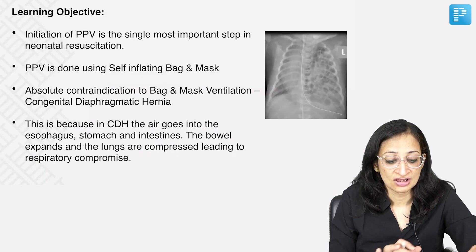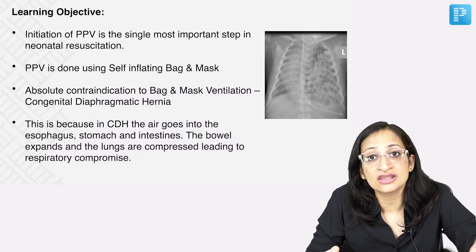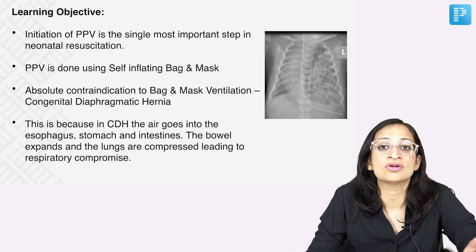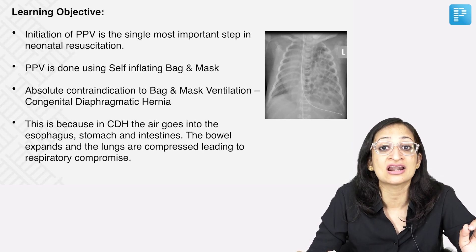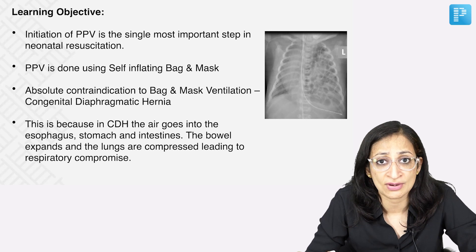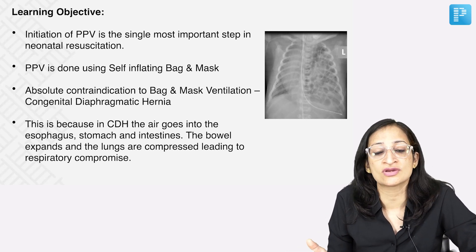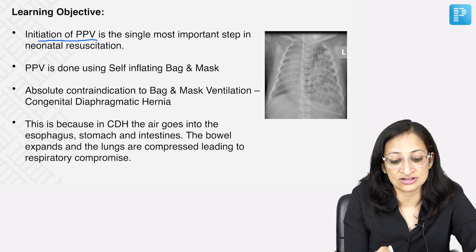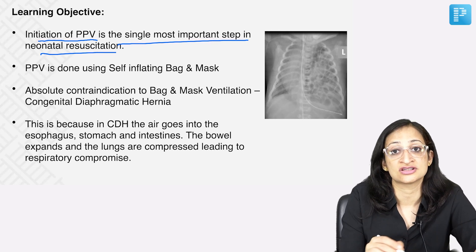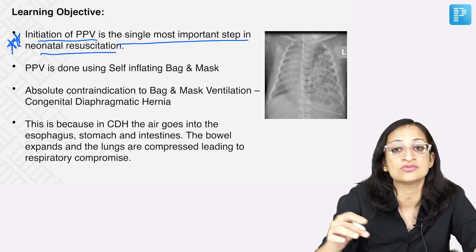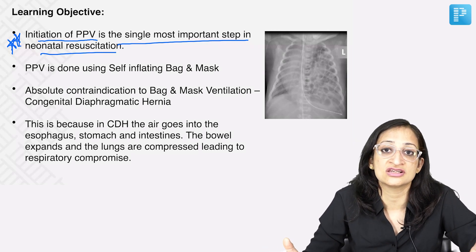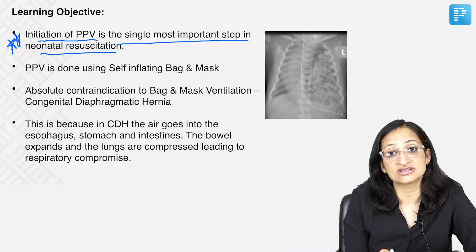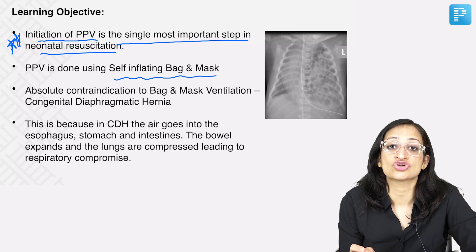Learning objectives are also mentioned at the end of each question — what exactly is the purpose of the question and what points you should remember to solve similar questions. Through this question, the related topics are: initiation of positive pressure ventilation is the single most important step in neonatal resuscitation. PPV in neonatal resuscitation is done using a self-inflating bag and mask, also called an Ambu bag. The absolute contraindication to bag and mask ventilation is congenital diaphragmatic hernia.